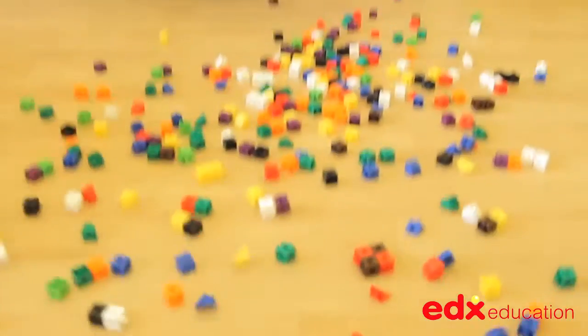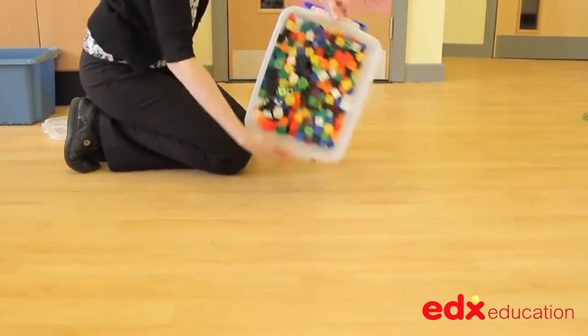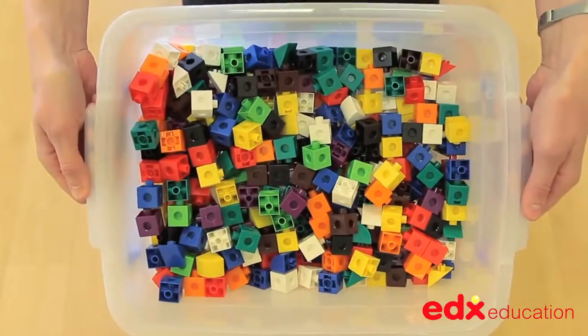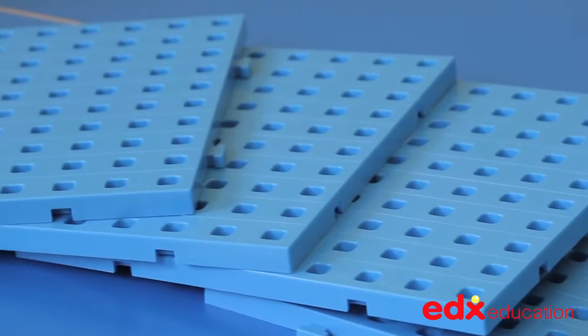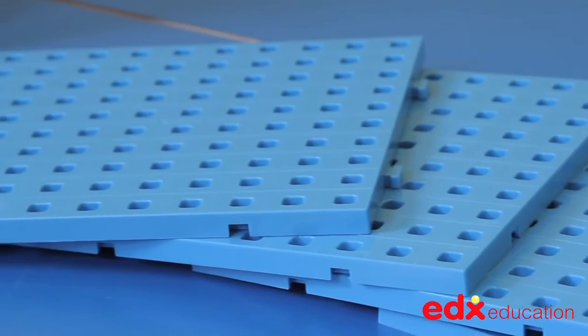The Linking Cubes set comprises of 500 pieces in 10 bright colours. In addition, the set comes with four baseboards onto which patterns, designs and models can be built.